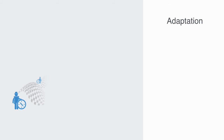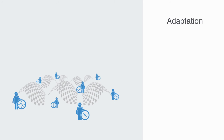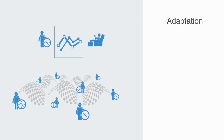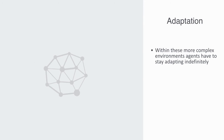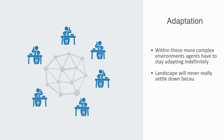Within topologies that are moving up and down due to different agents acting, reacting, and adapting to each other's behavior, agents have to continuously balance exploration and exploitation. Unlike our previous example — where after some time the agent settled into a stable state — within these more complex environments, agents have to stay adapting indefinitely. If they stop, they will slowly fall behind as others exploit the opportunity. Likewise, the landscape will never really settle down, because as soon as it does approach stasis, this will create an opportunity for some agent to act, and then again some other agent to react, as the whole topology becomes reanimated.